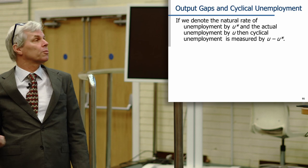You can call the natural rate of unemployment U star, and you get the same sort of thing. It just reflects the output gap.